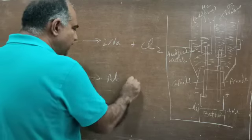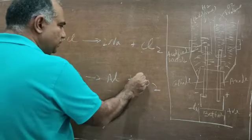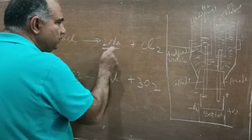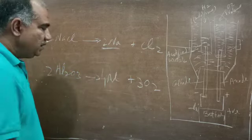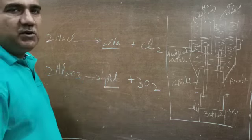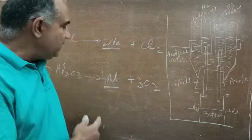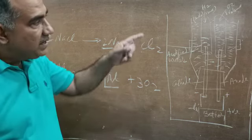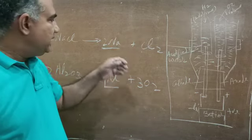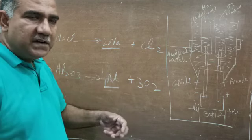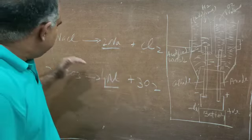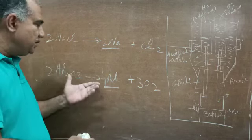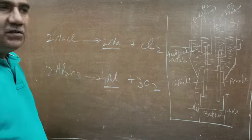For Al₂O₃, the decomposition gives Al and O₂, balanced as 2Al₂O₃ → 4Al + 3O₂. The metal is always obtained at the cathode during electrolysis. This is because metals form electropositive ions, and these positive ions are attracted to the cathode, which is negative. So any metal can only be obtained at the cathode during electrolysis.